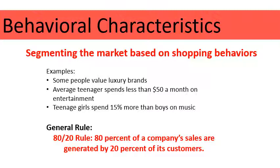In review, the four types of ways to segment a market are: demographics — statistics like age, marital status, and income; geographics — segmenting the market based on where people live; psychographics — looking at people's lifestyles and values; and finally behavioral characteristics — segmenting the market based on people's shopping behaviors.